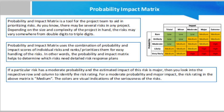The Probability and Impact Matrix uses the combination of probability and impact scores of individual risks and ranks and prioritizes them for easy handling. In other words, it helps to determine which risks need a detailed risk response plan. It is vital to understand the priority for each risk, as it allows the project team to appreciate the relative importance of each risk. For example, a risk with a high probability of occurring and a high impact on project objectives will likely need a response plan.